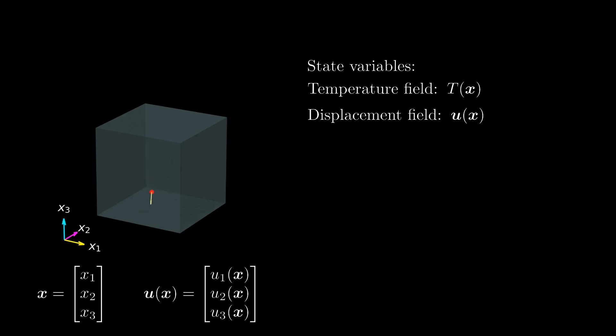A vector field can best be illustrated by picking a few points in the domain and drawing the corresponding vectors at these points. Here I am illustrating an exemplary displacement field. The displacement tells us to which point each point in the domain is moving when the matter is deformed.